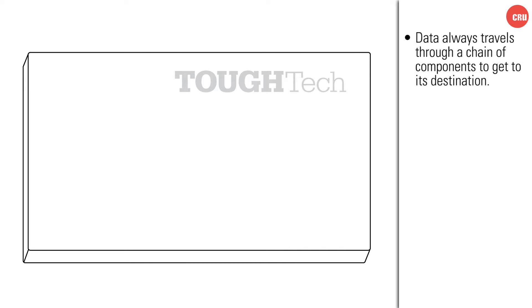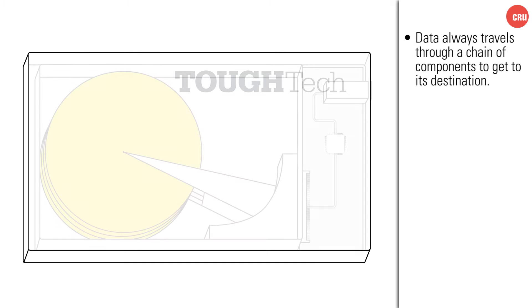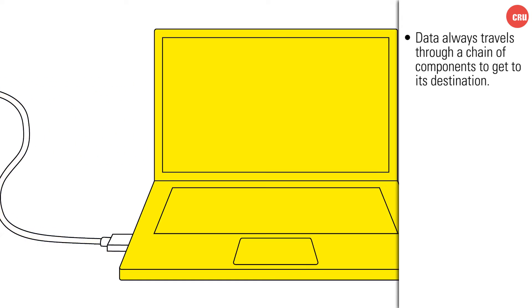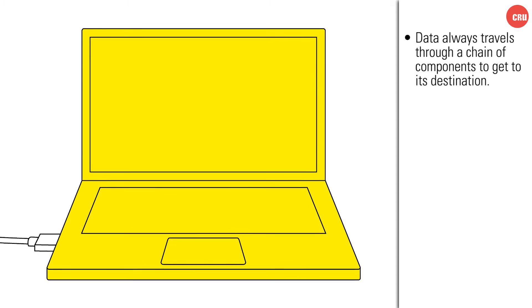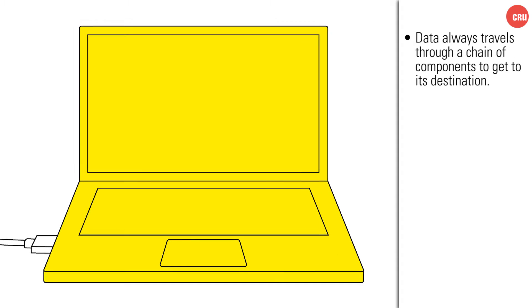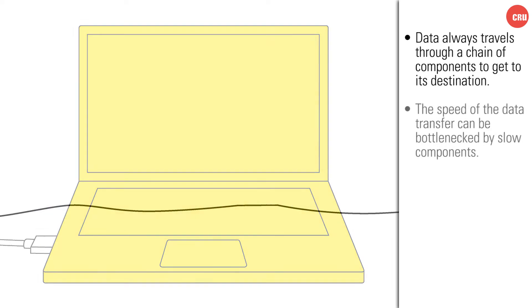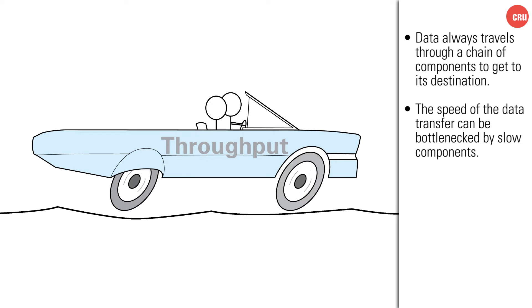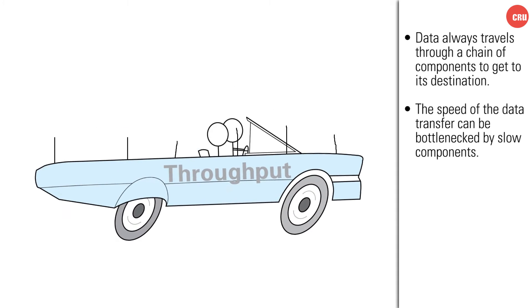Say you have an external USB 3.0 drive enclosure. The data chain goes from the data on the drive inside, to the drive's interface to the external enclosure, to the USB 3.0 interface in the enclosure, and from there through a USB 2.0 cable to the USB 2.0 interface on the computer. USB 3.0 is backwards compatible with USB 2.0, so you may think you're getting the USB 3.0 speed of 5 gigabits per second for your data transfer. But the slowest component sets the pace, and if we look at the speed of the USB 2.0 cable, you'll see that the speed of your data transfer drops right off a cliff.